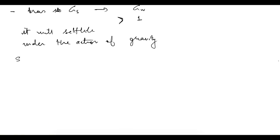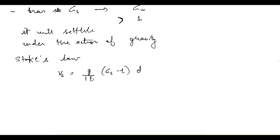The very famous one is Stokes' formula, applied when we assume the flow is laminar or viscous. Stokes' law gives the velocity of settlement as: Vs = (g/18) × (GS − 1) × d² / μ, where GS is the specific gravity of the particle, d is the particle size, and μ is the kinematic viscosity. Stokes' law is valid only if the particle size is less than 0.1 mm.